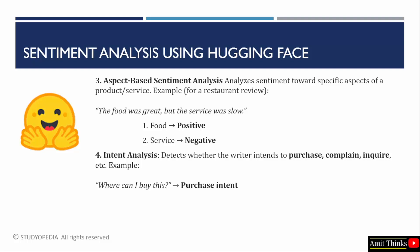Then comes aspect-based sentiment analysis — sentiment towards a specific product or service. For example, 'The food was great, but the service was slow.' In this case, the food has a positive sentiment, but since the service was not good, it is a negative sentiment. Then there is intent analysis — like the intent to purchase something or to complain. For example, 'Where can I buy this product?' is a purchase intent. These were the types of sentiment analysis.